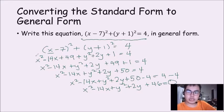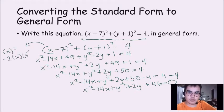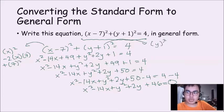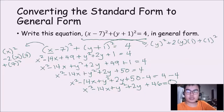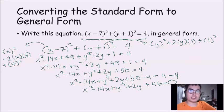What I did here is: x squared minus 2 times x times 7 plus 7 squared. Then for the y terms, it will be y squared plus 2 times y times 1 plus 1 squared. That's why it turned out to be that result. So now we're going to move to the next example.